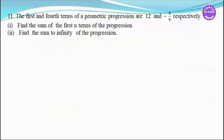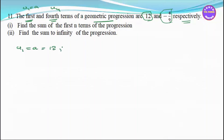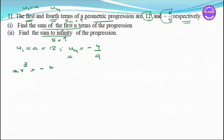Number 11. The first term u1 = a and the fourth term u4 of a geometric progression are 12 and minus 4 by 9 respectively. U4 is equal to minus 4 by 9. Number 1: find the sum to infinity.